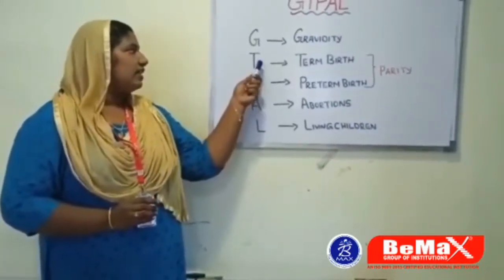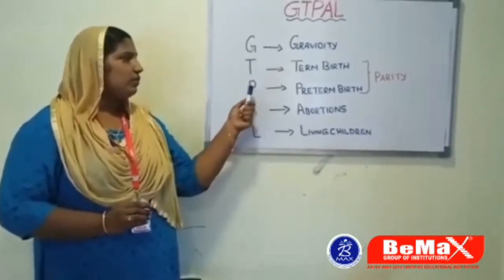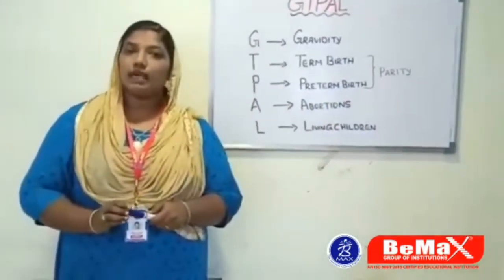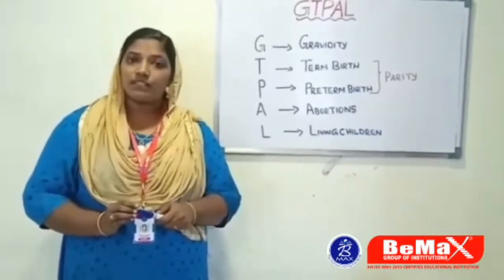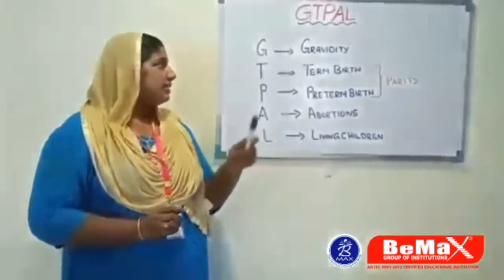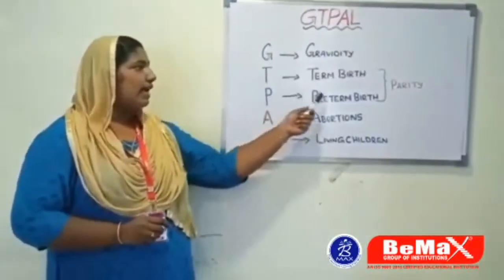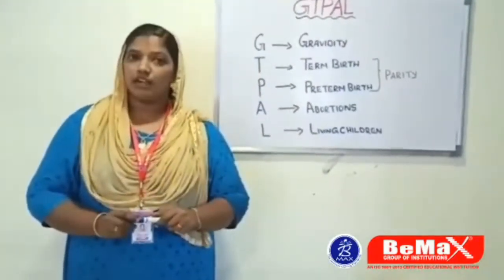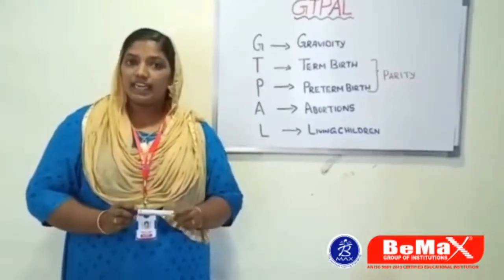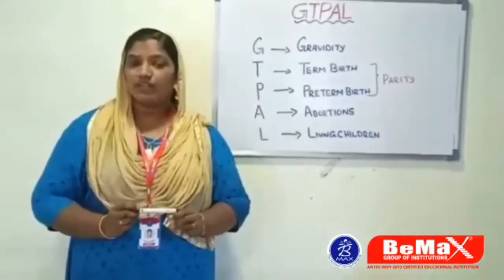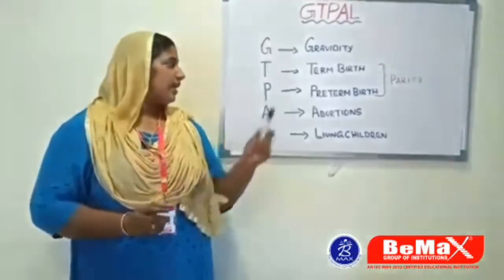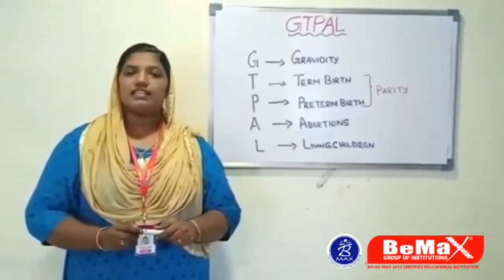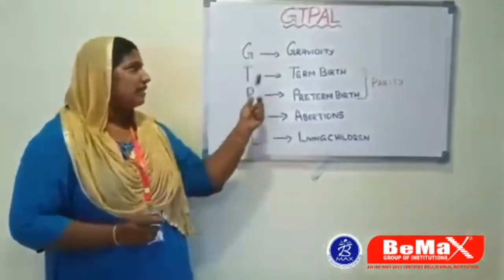The second letter is T and the third is P. These two are included in PARITY. Parity means the total number of births which occur after the 20th week of gestation, and it is divided into two: TERM BIRTH and PRETERM BIRTH. Term birth means any delivery occurring after 37 weeks of gestation. Preterm birth means any delivery occurring before 37 weeks of gestation.